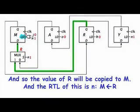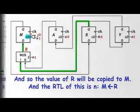And so, the value of R will be copied to M and the RTL of this is N, R will be copied to M.